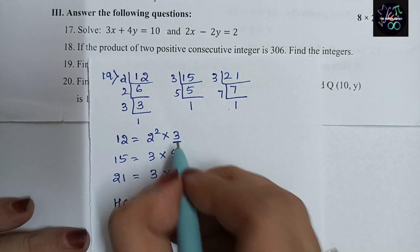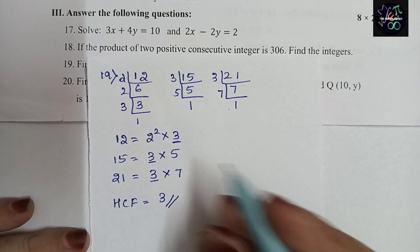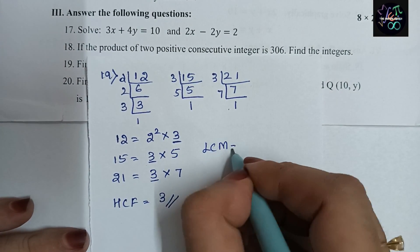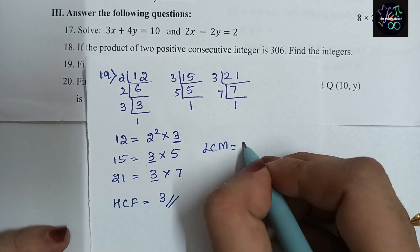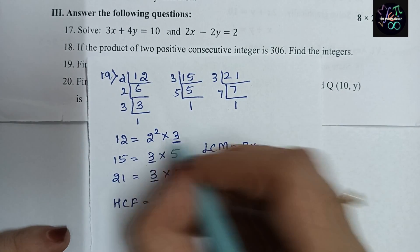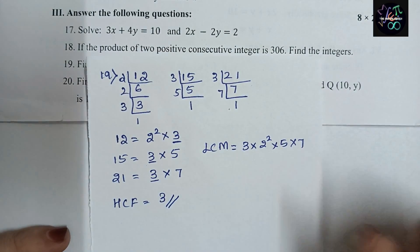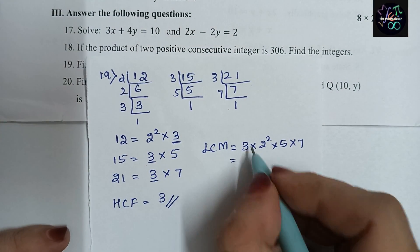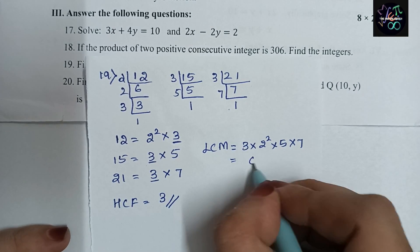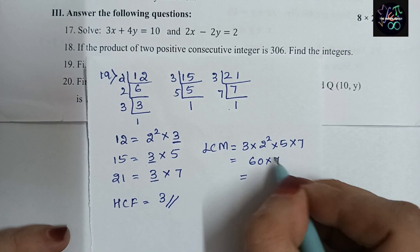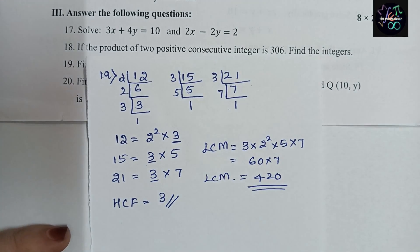For HCF: the common factor in 12, 15, and 21 is 3, so HCF = 3. For LCM: we take 3 once, and then all remaining factors: 2², 5, and 7. So LCM = 3 × 4 × 5 × 7 = 3 × 4 = 12, then 12 × 5 = 60, then 60 × 7 = 420. Therefore LCM = 420.